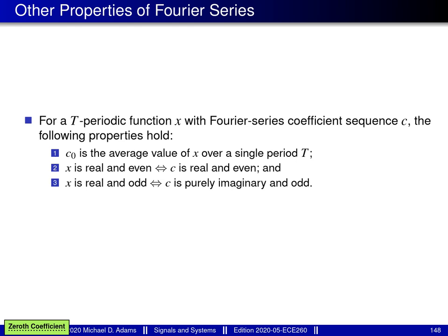A few additional properties of Fourier series are worth noting for a T-periodic function X with coefficient sequence C. First, C_0 — the coefficient with index 0 — is the average value of X over a single period T. Second, X is real and even if and only if C is real and even. Third, X is real and odd if and only if C is purely imaginary and odd. The first property is especially useful as it attaches a physical significance to C_0, identifying it as the average value of X over one period.